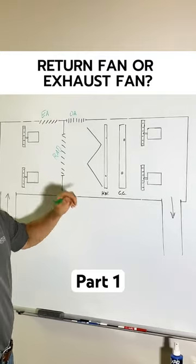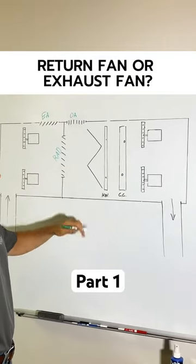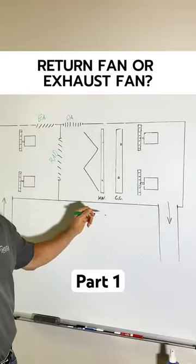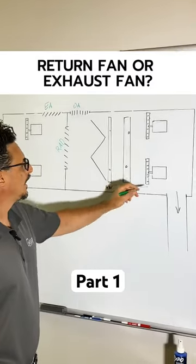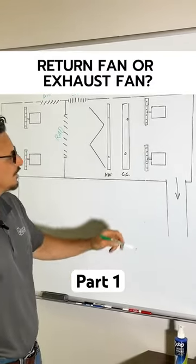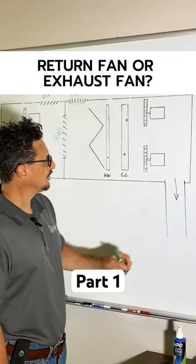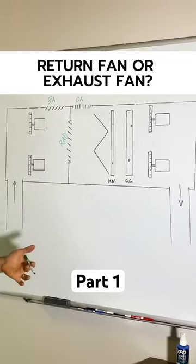Pre-filter. Obviously that could be a filter bank with bigger filters. Hot water pre-heat coil. Chill water cooling coil and then your two supply fans and your supply fan plenum going out to the building. So this is what is called a typical.